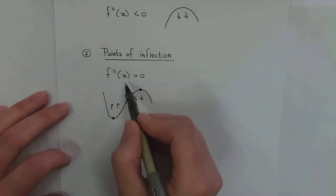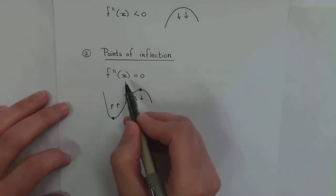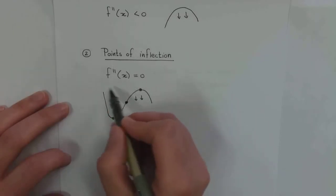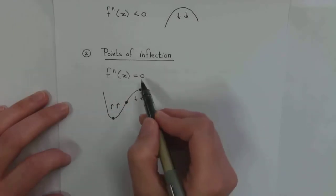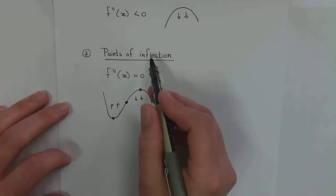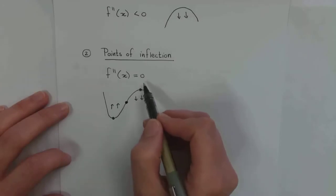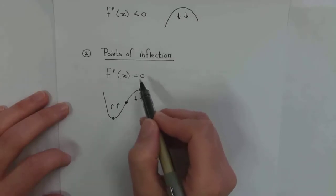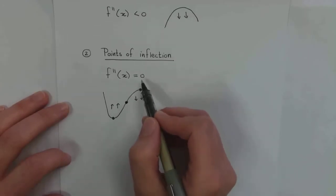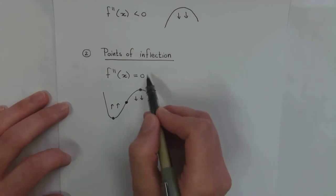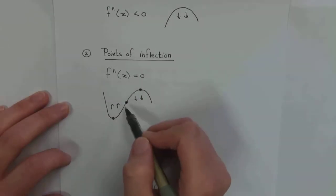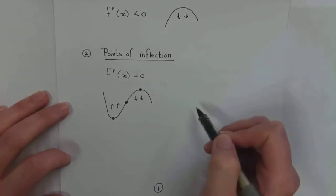When it comes to cubic polynomials, we can set the second derivative equal to zero and that will give us the point of inflection. For the AP Maths people, this does not work for all graphs, but it does definitely work for the cubic function — setting that second derivative equal to zero to find the point of inflection.